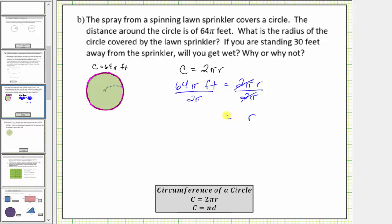Equals on the left side, pi divided by pi simplifies to one, and sixty-four divided by two is equal to thirty-two. And therefore the radius is equal to thirty-two feet.